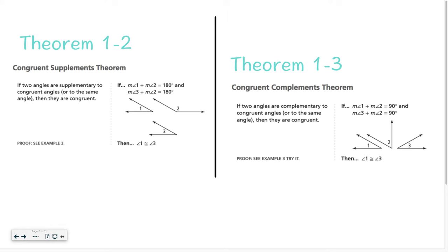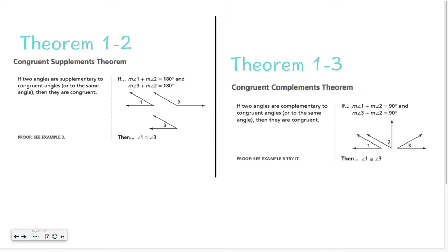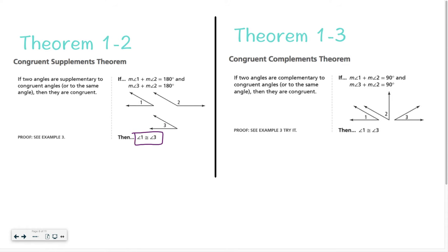The next thing we are going to look at is Theorem 1-2, the congruent supplements theorem. This is basically what we just did in that last step. If angle 1 is supplementary to angle 2, and angle 3 is supplementary to that same angle, then angle 1 and angle 3 have to be congruent. Theorem 1-3 is the same idea but with complementary angles — meaning they add up to 90. So if angle 1 is complementary to angle 2 and angle 3 is complementary to angle 2, therefore angle 1 and angle 3 have to be congruent. It applies for both supplementary and complementary.